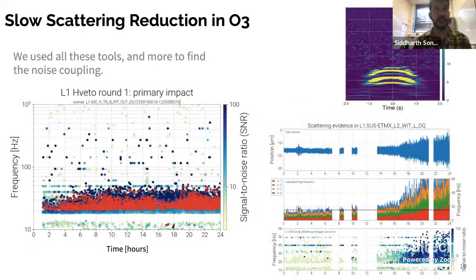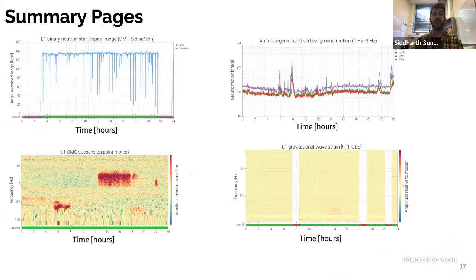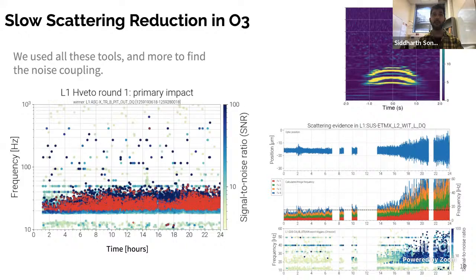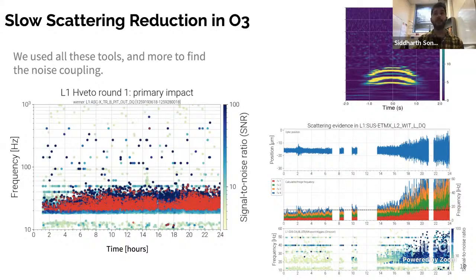As an example of slow scattering reduction: we had a lot of slow scattering during O3 at all detectors — LIGO Livingston, Hanford, and Virgo. Using these tools, we found two specific channels that were highly coupled with the slow scattering noise in the primary gravitational wave channel. We went through all the steps to establish this noise coupling, made the necessary changes, and after fixing the source of noise, the amount of slow scattering was drastically reduced. This is an example of how data quality tools can reduce transient noise in the detector.